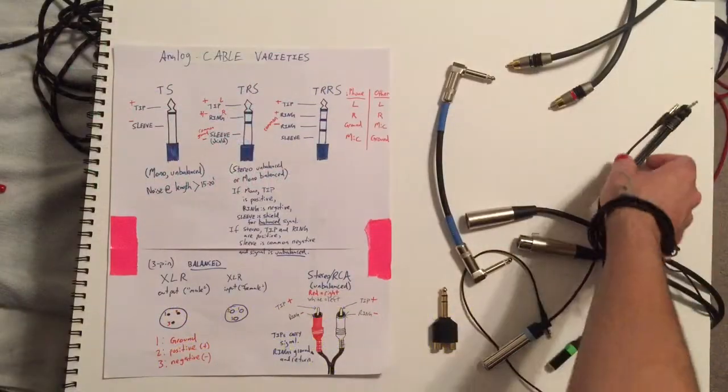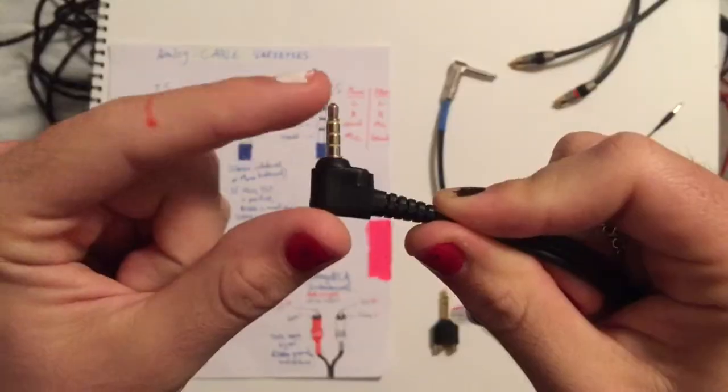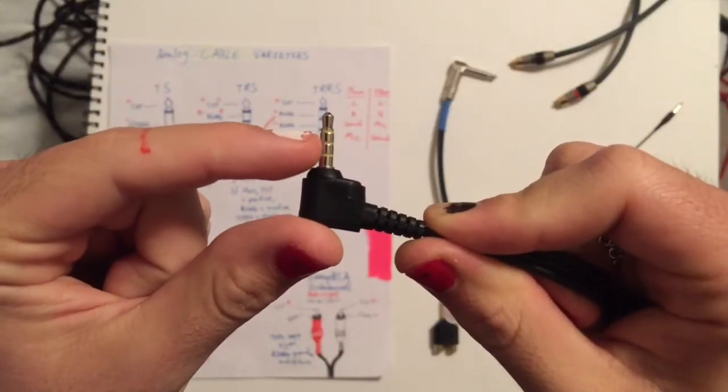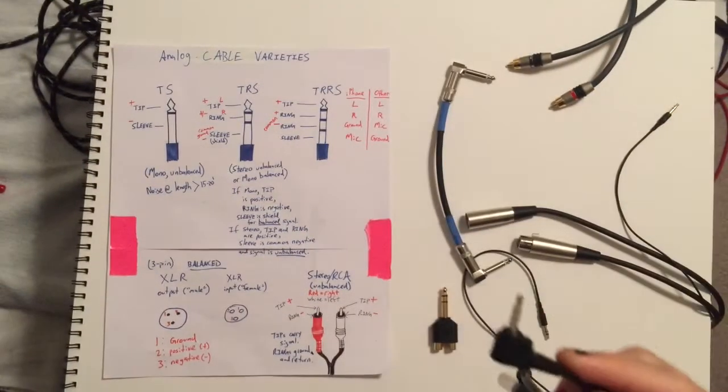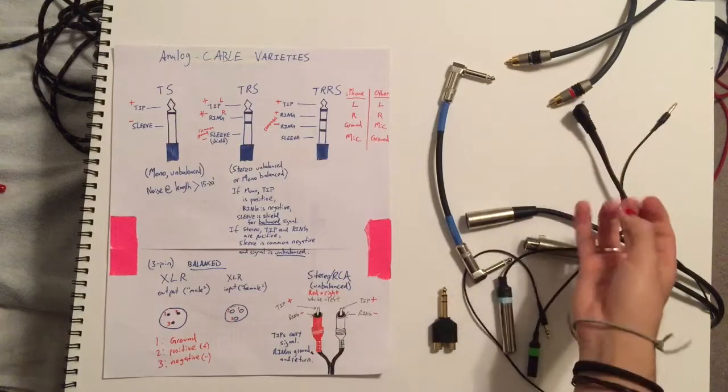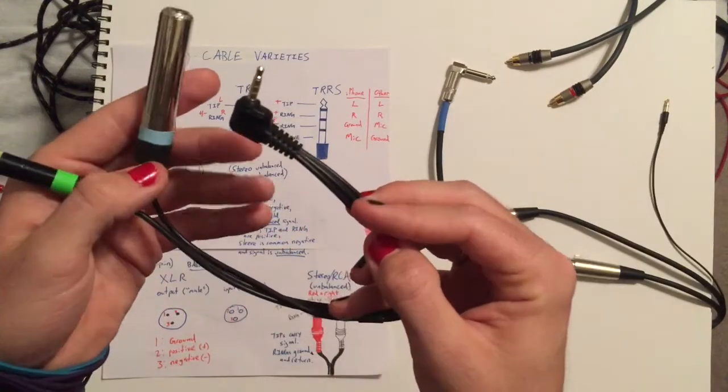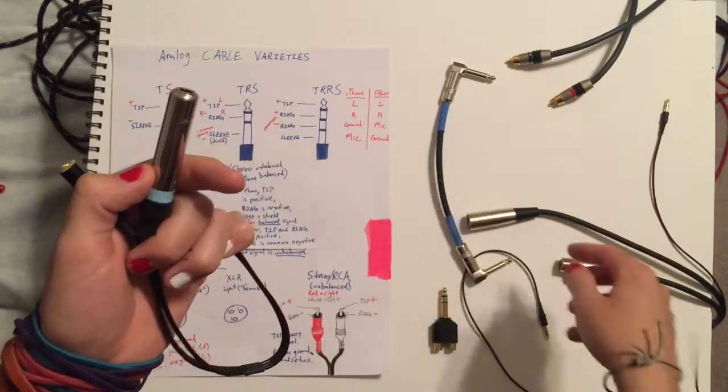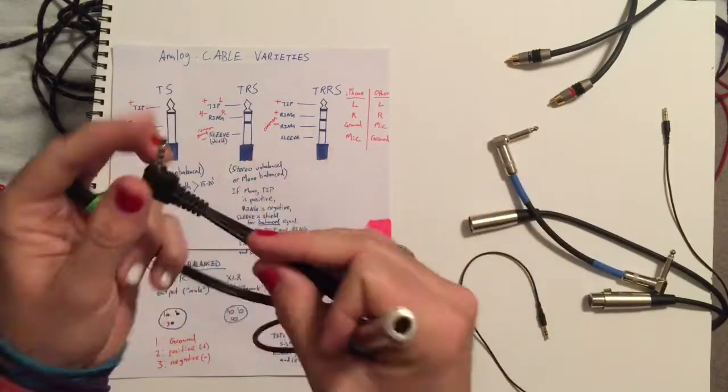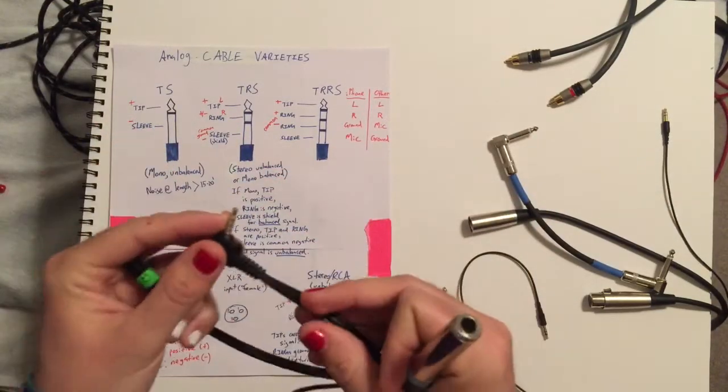Now there's something interesting also called a TRRS cable. Tip, ring, ring, sleeve. This is a cable that is made for smartphones. I have this special adapter and that enables me to plug a mixer specifically and channel it into my iPhone.